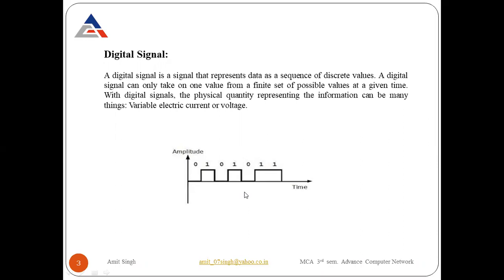With digital signals, the physical quantity representing the information can be many things, for example variable electric current or voltage, from where the data travels from the sender to the receiver. Looking at the diagram, the amplitude is on the left side and time is on the downward axis. The difference is it only consists of a single value at a time. In the case of digital signals, we only have two values — binary values.